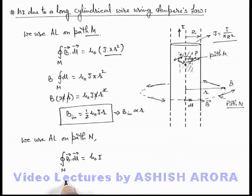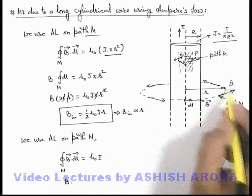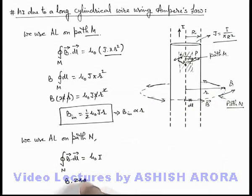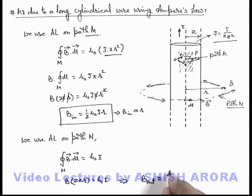It can be written as B multiplied by integration of dL for this path we can write as 2π r, is equal to μ₀ I. This implies B at an outside point of this wire we can write as μ₀ I by 2π r.